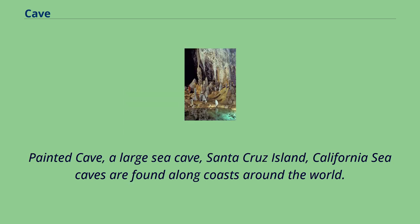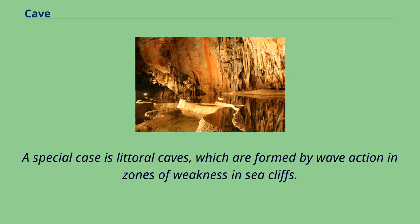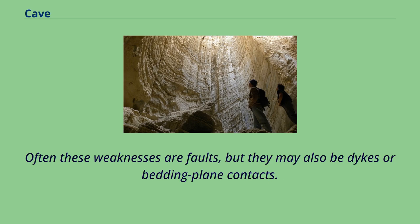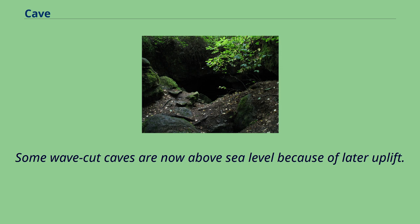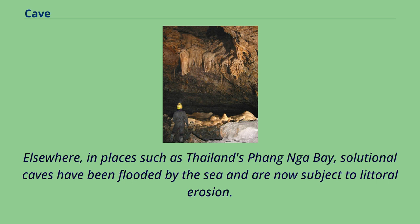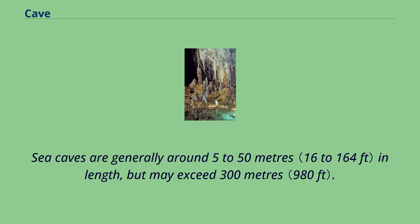Painted Cave, a large sea cave, Santa Cruz Island, California. Sea caves are found along coasts around the world. A special case is littoral caves, which are formed by wave action in zones of weakness in sea cliffs. Often these weaknesses are faults, but they may also be dikes or bedding plane contacts. Some wave-cut caves are now above sea level because of later uplift. Elsewhere, in places such as Thailand's Phang Nga Bay, solutional caves have been flooded by the sea and are now subject to littoral erosion. Sea caves are generally around 5 to 50 meters in length, but may exceed 300 meters.